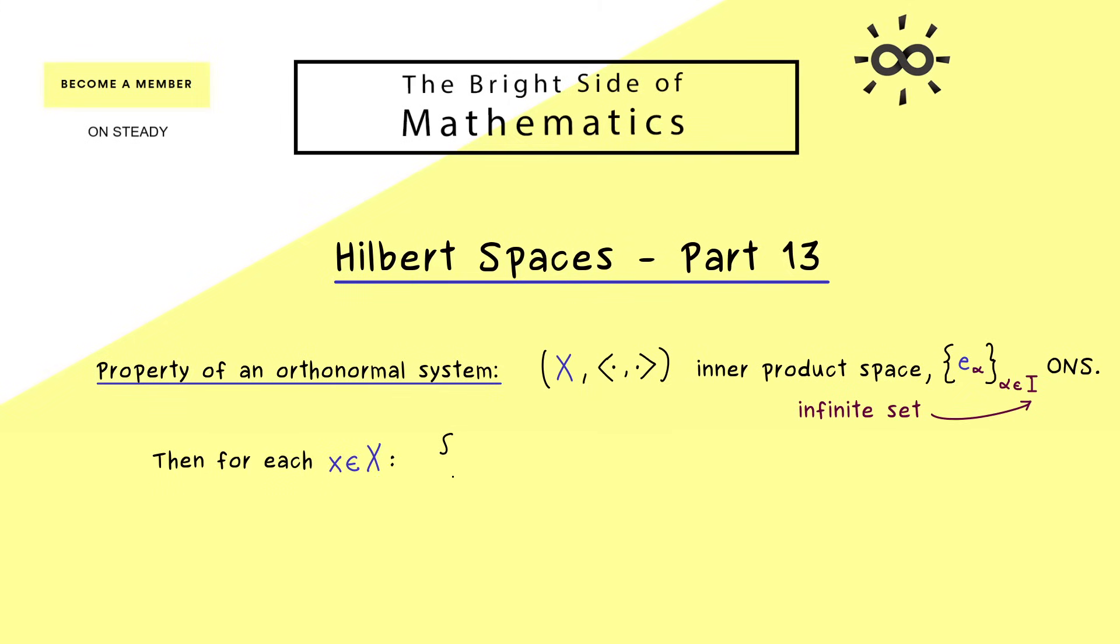So for example, if you fix an element X in our inner product space, we could look at all the inner products X with the ONS. So E_alpha with X in the inner product and we only need the ones that are non-zero. And now it turns out, no matter how high the infinity for I is, this set is always countable. So it is either finite or it has the same cardinality as the natural numbers.